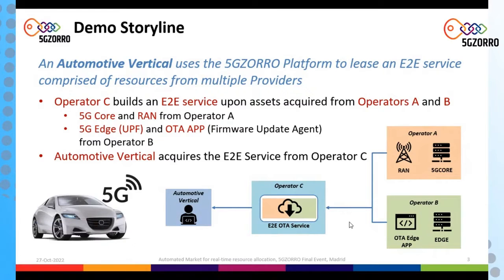The firmware updates are pulled from a server available in the core. In this demo, Operators A, B, and C work as service providers. Operator A is offering core resources, while Operator B is offering edge resources. Operator C will inspect the offers available on the market, purchase offers from Operator A and Operator B, and then create a composite offer that will be purchased by the automotive vertical, Operator E.